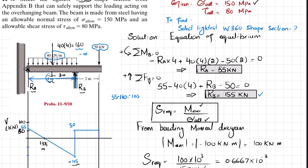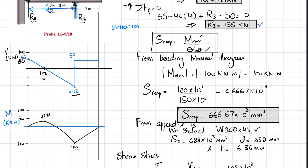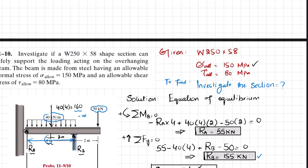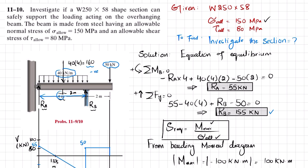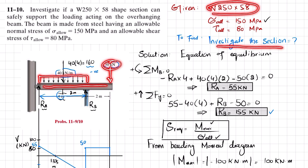The loading is the same as in problem 11.9, which we discussed earlier, so I will take help from that — you can go and watch 11.9 for that portion. This is an overhanging beam with a uniformly distributed load and a point load at one end. We will investigate whether W250×58 can be used for this loading.